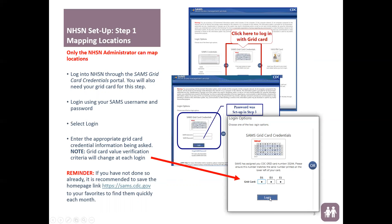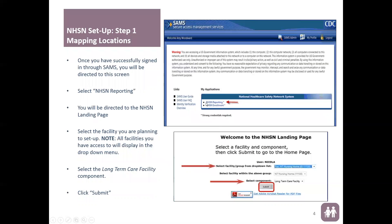Once you've completed that login, select NHSN Reporting. Depending on whether you're reporting for one facility or multiple facilities, the next page will vary. If you're reporting for one facility, you'll be directed to the home page. If you're reporting for more than one facility, you'll be directed to the landing page, where you select the appropriate facility you are setting up and the component, which is long-term care facilities, then submit.